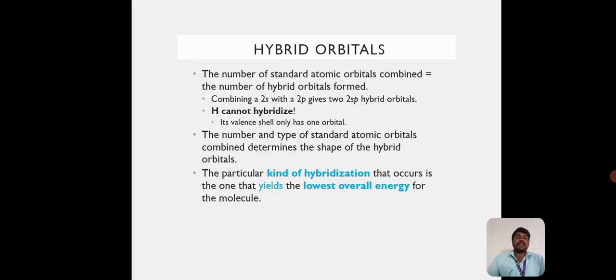The number and type of standard atomic orbitals combined determine the shape of the hybrid orbitals. The particular kind of hybridization that occurs is the one that yields the lowest overall energy for the molecule.